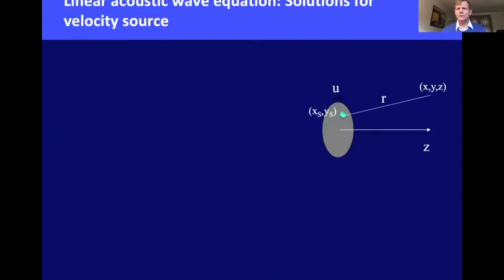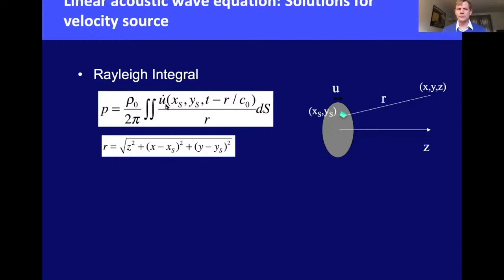To calculate the pressure field from a moving disc, consider a small area element at source location (xs, ys). The pressure at observation point (x, y, z) comes from integrating contributions from all surface elements, each delayed by t − r/c to allow wave propagation and with a 1/r spherical spreading factor. With a ρ₀/2π scaling factor, this is the Rayleigh integral, which lets you compute pressure anywhere in space from the particle velocity on the surface, for any time waveform.